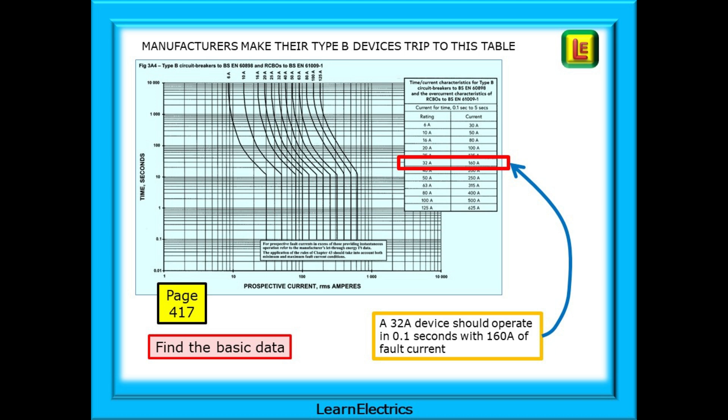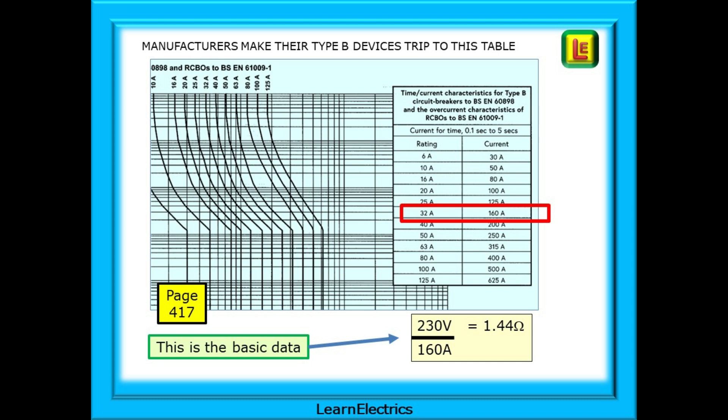It shows that a 32-amp device should operate in 0.1 seconds with 160 amps of fault current. Whether our required disconnection time is 0.4 seconds or 5 seconds, this device will disconnect the circuit in the required time if the required fault current flows. This is the basic data that we need in order to make the rest of the calculations.